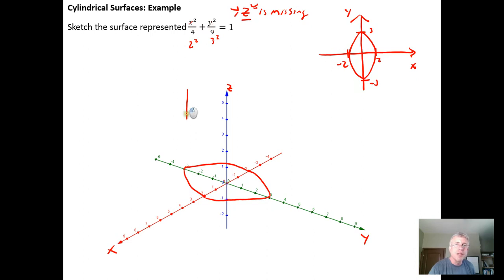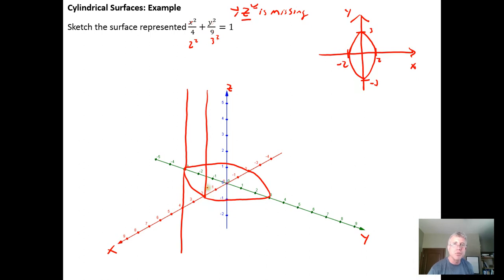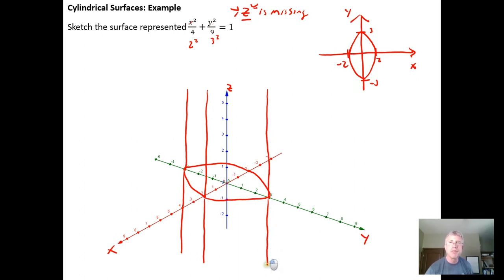Drawing a line parallel to the z axis that picks up the point negative 3 right there, and then drawing the line parallel to the z axis that picks up the 2. Drawing the line parallel to the z axis that picks up this positive 3 over here. And then drawing the line parallel to the z axis that's picking up that negative 2.